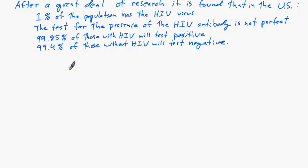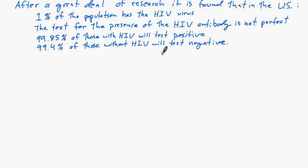After a great deal of research, it has been found that in the U.S., about 1% of the population has the HIV virus. The test for the presence of the HIV antibody, which means having the virus, is not perfect, though as you can see it's pretty good. 99.85% of those with HIV will test positive, and 99.4% of those without HIV will test negative.